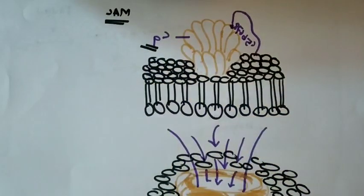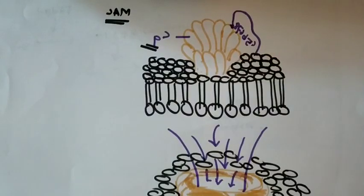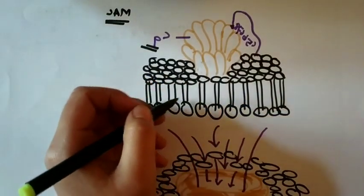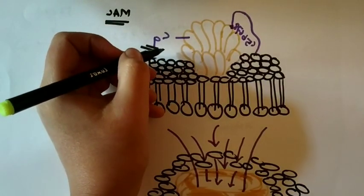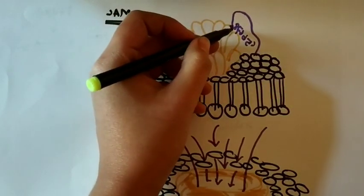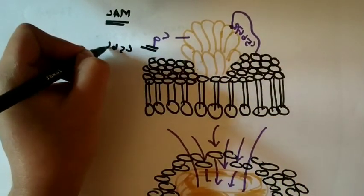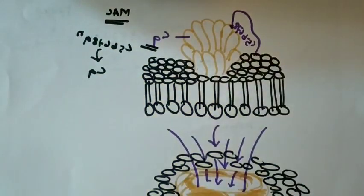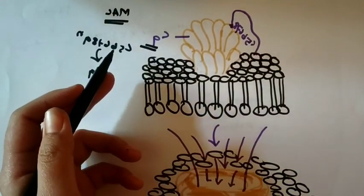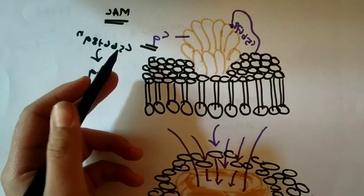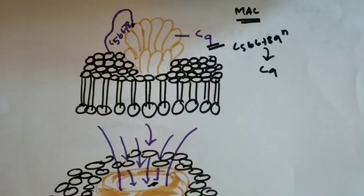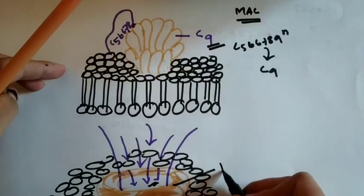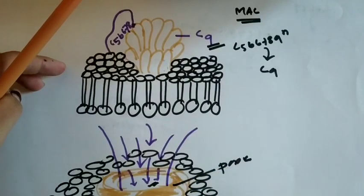In the mechanism of action of MAC, the C9 molecules attach together and form a tube. This tube attaches to the bacterial plasma membrane, and C9 attaches with C5B678 to form C5B678 poly-9, a polymer of C9 molecules. This MAC molecule makes a pore on the bacterial cell membrane, through which all the bacterial contents come out and the cell dies.